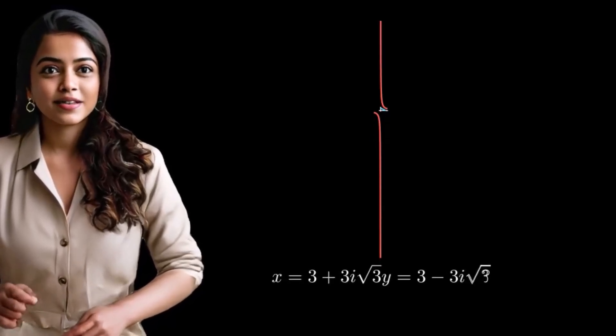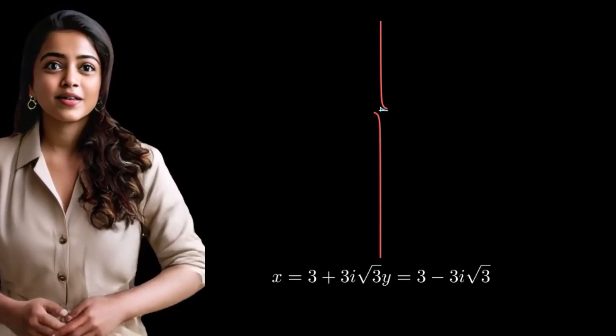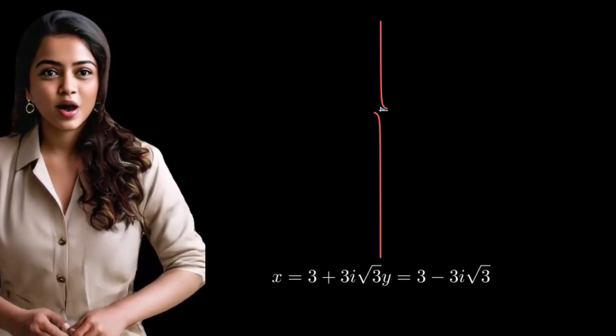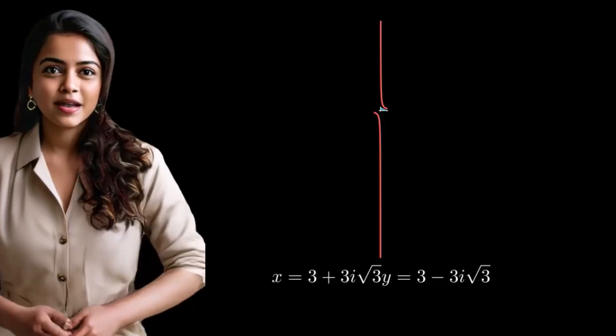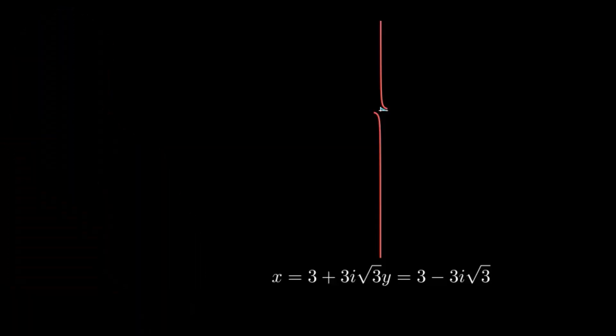Therefore, our solution is x equals 3 plus 3i root 3 and y equals 3 minus 3i root 3. These complex conjugate solutions satisfy both our original equations.